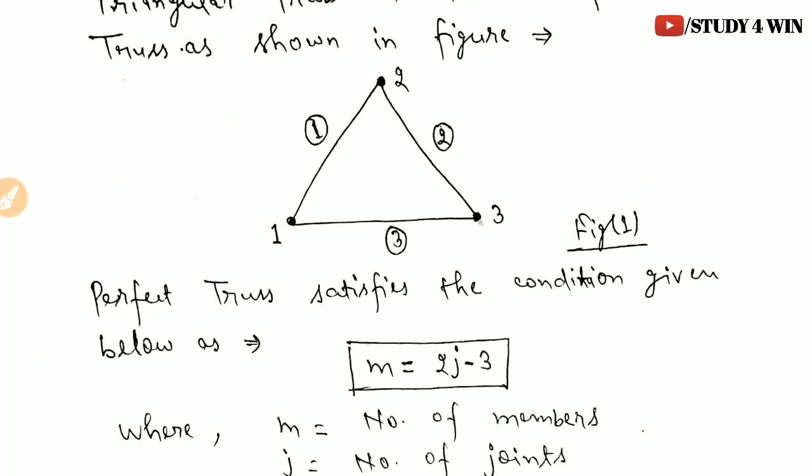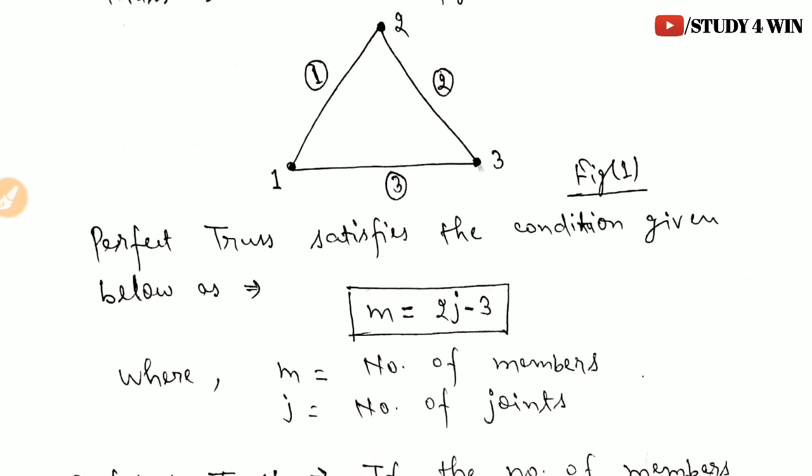In figure one, you can see a triangle. The total number of members is 1, 2, and 3, and the number of joints is also 1, 2, and 3. A perfect truss satisfies the condition: m = 2j − 3, which is the basic equation to solve a truss. Here, m is equal to the number of members and j is equal to the number of joints.